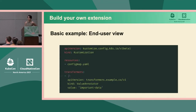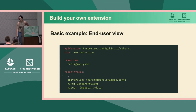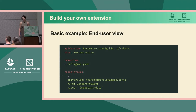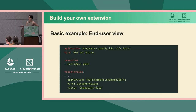Let's start with an example: we're going to build a transformer that does something really simple — add a single annotation that has a static key and a user-controlled value. We determine what the key is; the user gives us the value. We insert that annotation into all the resources they give us. In our customization, the end user writes something like this: a transformer configuration with its own kind called `ValueAnnotator`, using an API version unique to our company. In the transformer configuration, the user supplies the important data they want put in the annotation.